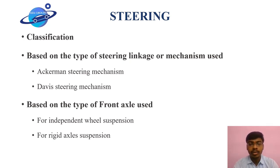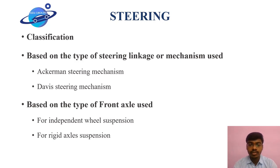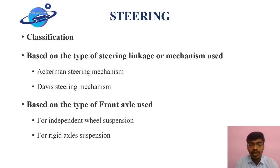Classification based on the type of steering linkages used: steering constructions are of two types — Ackerman steering mechanism and Davis steering mechanism. Based on the type of front axle used, there are two types: independent wheel suspension and rigid axle suspension. These have already been discussed in the suspension lecture.